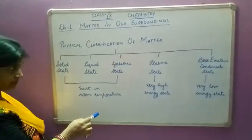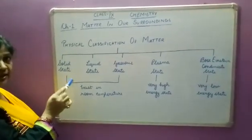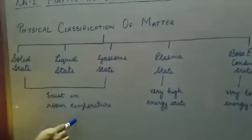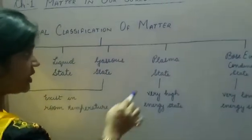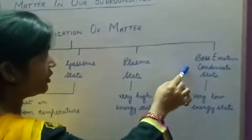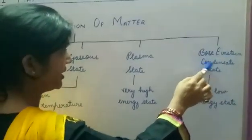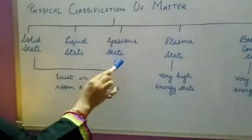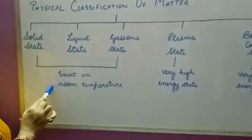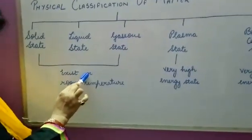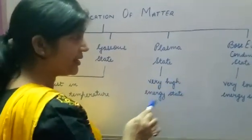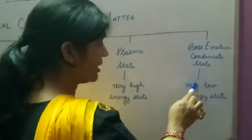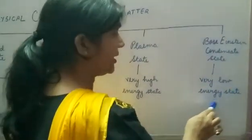On this basis, matter is classified into five types: solid state, liquid state, gaseous state, plasma state, and Bose-Einstein condensate state. The first three states — solid, liquid, and gaseous — can exist at room temperature. Plasma state is a very high energy state, and Bose-Einstein condensate state is a very low energy state.